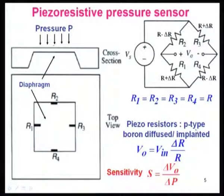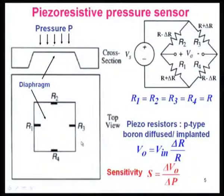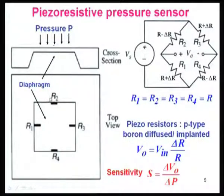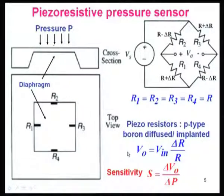Because of this, V_out = (ΔR/R) × V_in. The sensitivity of this pressure sensor is defined as ΔV_out due to a change in pressure ΔP. More about this pressure sensor we will see later when we go into the design case study of a pressure sensor.